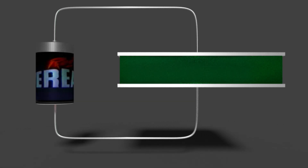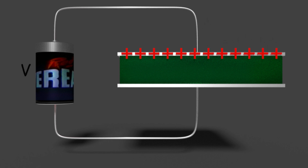Now, let us connect one battery of voltage V across the capacitor. As soon as we connect the battery across the capacitor, due to electrostatic force of the battery, many free electrons in the plate connected to the positive terminal of the battery will shift away towards the battery. This causes positive charge accumulation at that plate of the capacitor.